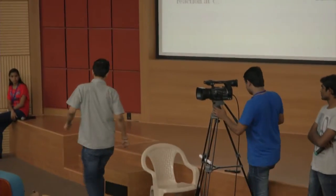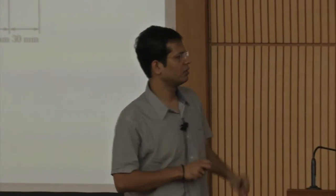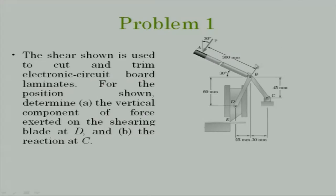Let us solve this problem. What we have done in yesterday's class is we ask ourselves: if you want to know what is the force in member DB, what if we remove DB? If we remove DB, then whatever force you apply here, there is nothing balanced about C. So DB is providing a counterbalance for this force about point C. We need to take this free body diagram and take moment about point C to find out the force in this two-force member.